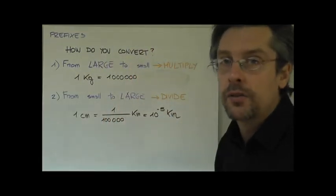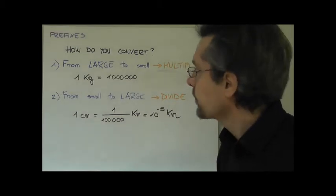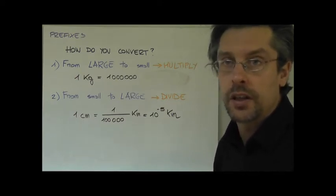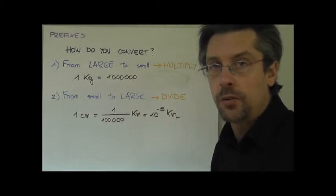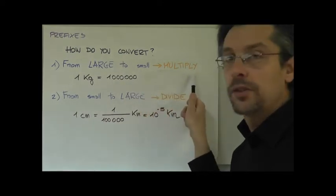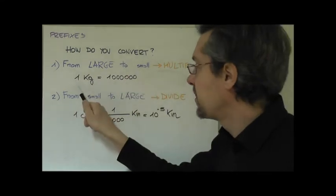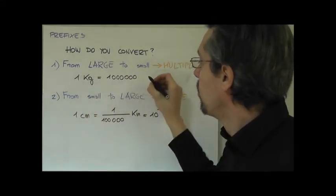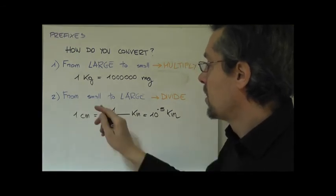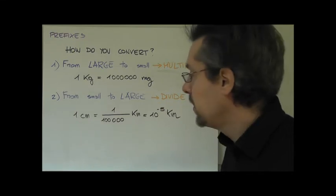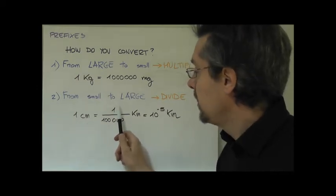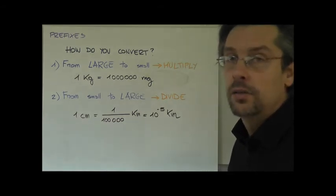Now it's important to see how we convert from one prefix to another. There are two rules you have to follow. One is the rule that you have to follow when you're converting from a large unit into a smaller unit. And one is the rule you have to follow if you want to go from a small unit to a large unit. In the first case, if you're going from large to small, you have to multiply by a power of 10. For instance, one kilogram is equal to one million milligrams. On the other hand, if you're going from a small unit to a large unit, you need to divide. For instance, if you want to know how much a kilometer one centimeter is, you need to divide by a hundred thousand, or 10 to the minus 5.